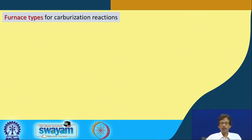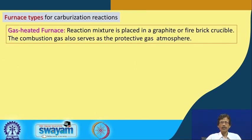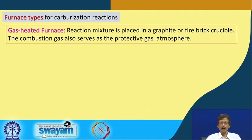These carburization reactions require very high-temperature furnaces. The first type is the gas-heated furnace, where gas is used for heating and can also serve as the inert protective atmosphere. The reaction mixture is placed in a graphite or fire brick crucible, and combustion gas like methane serves as the protective atmosphere during metal carbide formation.